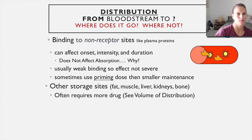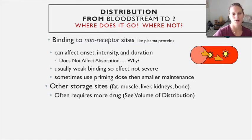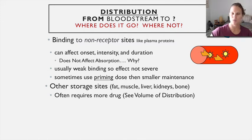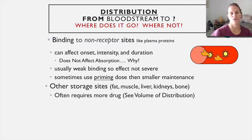Drugs can also distribute to other storage sites beyond plasma proteins. Known storage depots include fat — especially for fat-soluble drugs, which get stuffed into fat tissue, taking them out of circulation and making them less likely to hit their receptor — as well as muscle, liver, kidneys, and bone. When a drug distributes from the bloodstream to many sites other than the target receptor, we refer to that as the volume of distribution, and it often requires giving more drug.